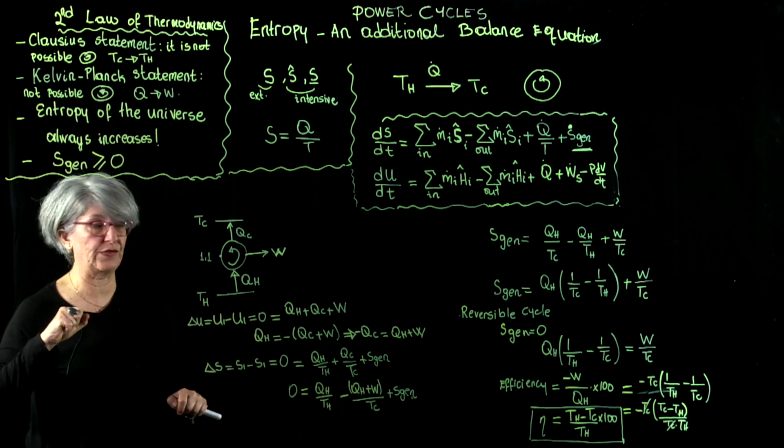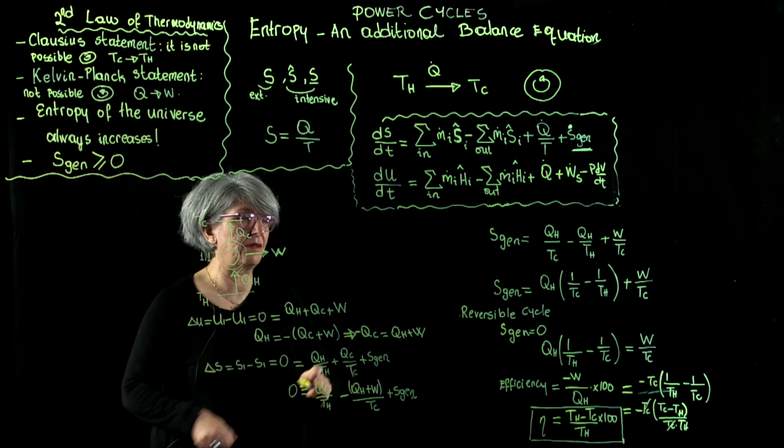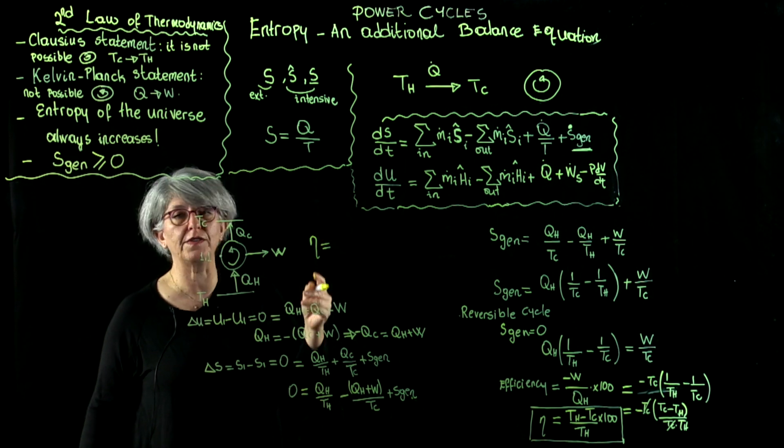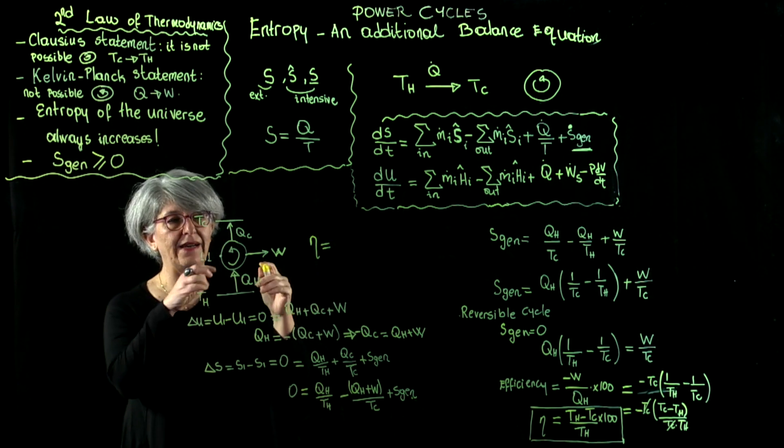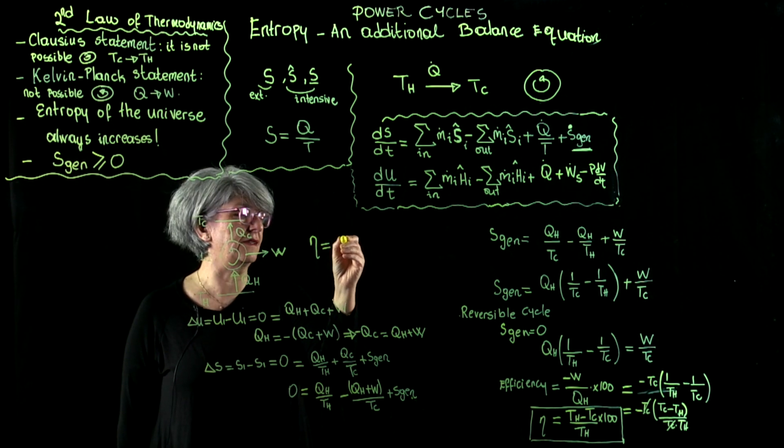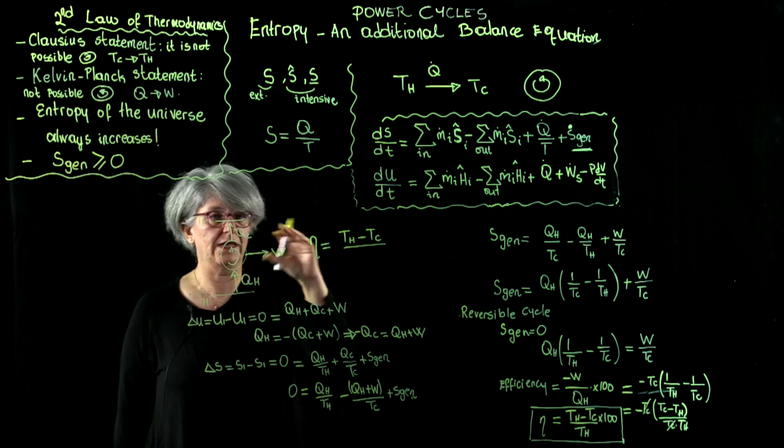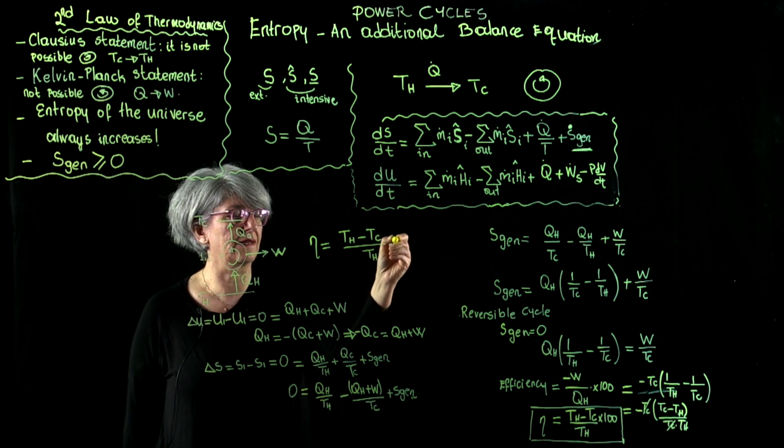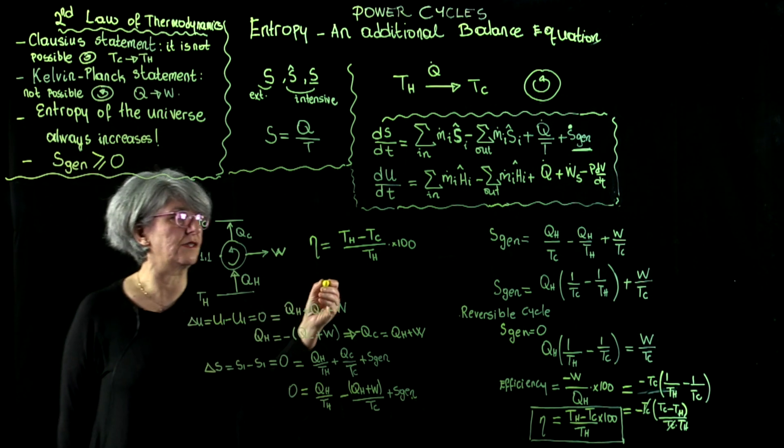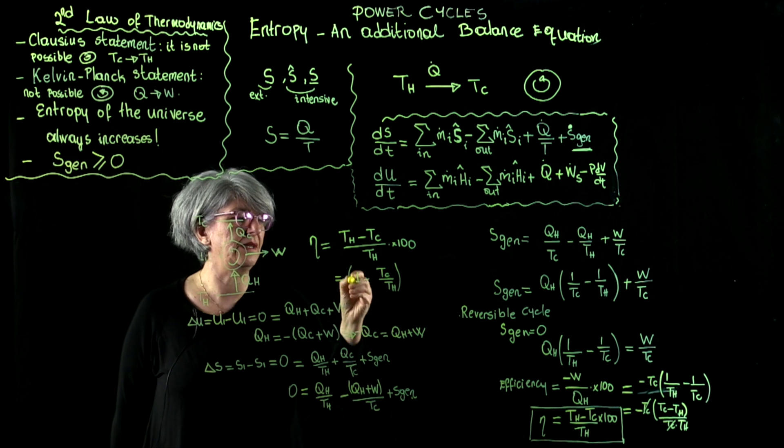Now, there are a few conclusions that we are going to arrive at by looking at this efficiency expression. Efficiency of the ideal cycle is going to be a function of the temperature difference between the source and the sink divided by the temperature of the hot source, or it is equal to 1 minus T cold over T hot multiplied by 100.